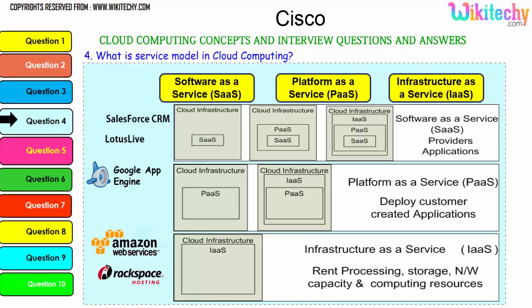To explain further: with SaaS, you have the cloud infrastructure, the software placed in the operating system, which sits in the infrastructure — everything is managed for you. With PaaS, the operating system is given to you on the server; you can put any application or software you want on it. With IaaS, the raw server is given to you; you choose the OS, application, and make any changes yourself. Examples of SaaS include Lotus Live and Salesforce CRM; PaaS examples include Windows Azure and Google App Engine; IaaS examples include Amazon Web Services and Rackspace hosting.